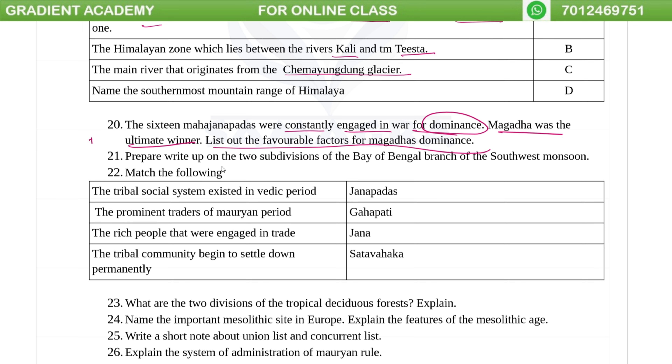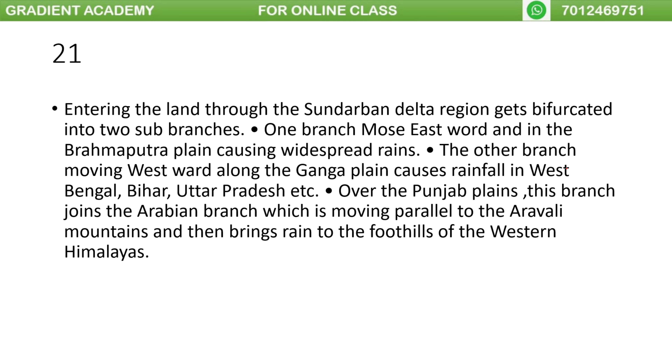Write upon the two subdivisions of the Bay of Bengal branch of the southwest Monsoon. We have two branches: the Arabian Sea branch and the Bay of Bengal branch.